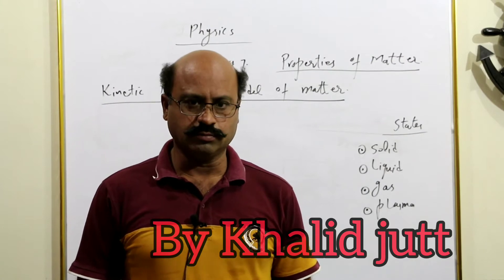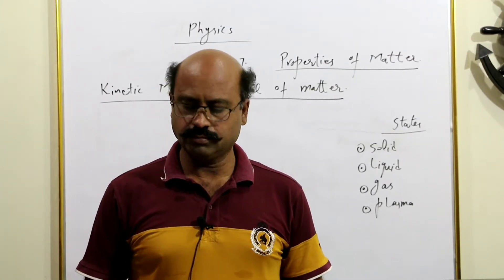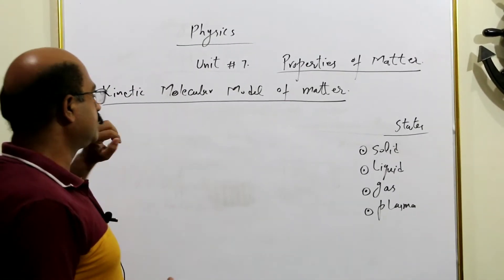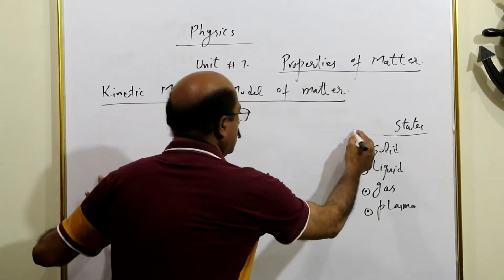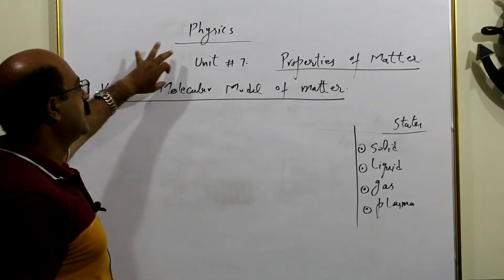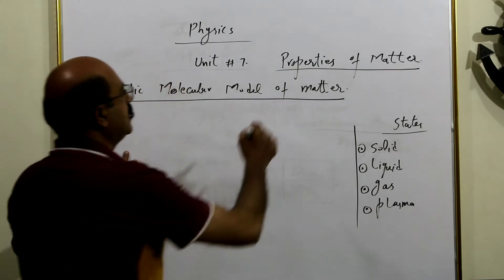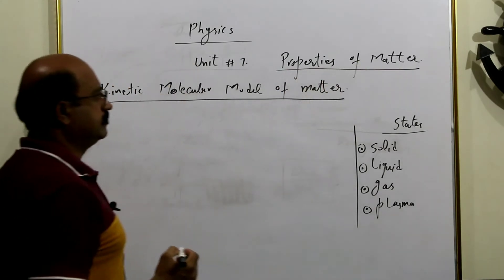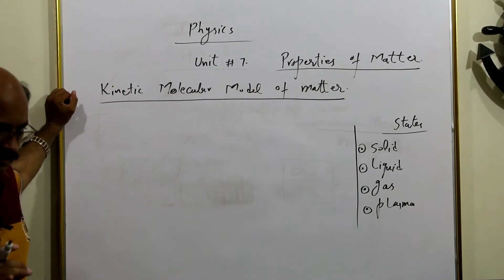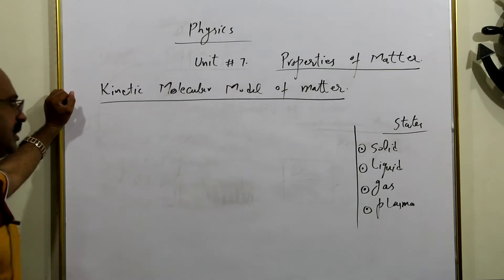Bismillahirrahmanirrahim, Assalamu Alaikum. We are going to start a new chapter — Unit Number 7. The chapter name is Properties of Matter. Matter kya hota hai, is ke baare mein mujhe bata hai.